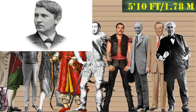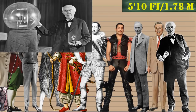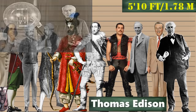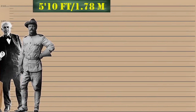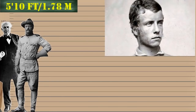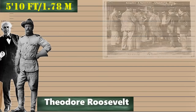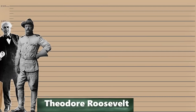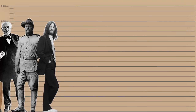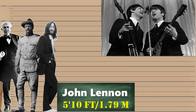Followed by American inventor and businessman who invented the phonograph, the light bulb, motion pictures and many more — Thomas Edison. And then we have the American statesman, politician, conservationist, naturalist and writer who served as the 26th president of the United States — Theodore Roosevelt. Lastly at 5 feet 10 inches we also have the English singer, songwriter and peace activist who co-founded The Beatles — John Lennon.